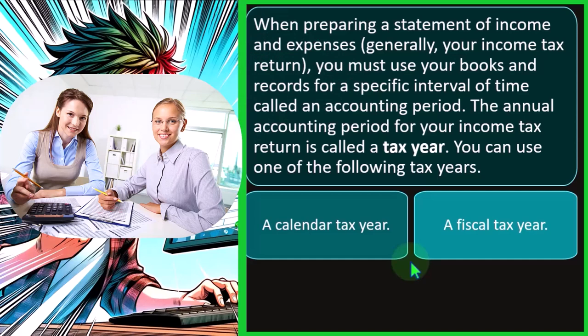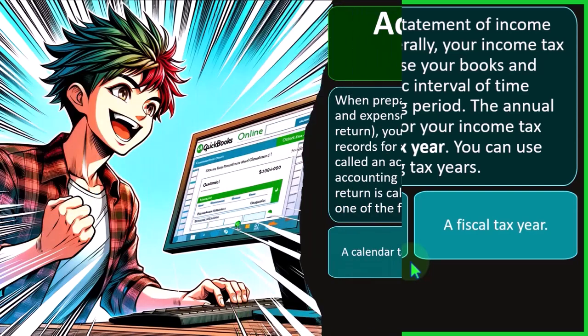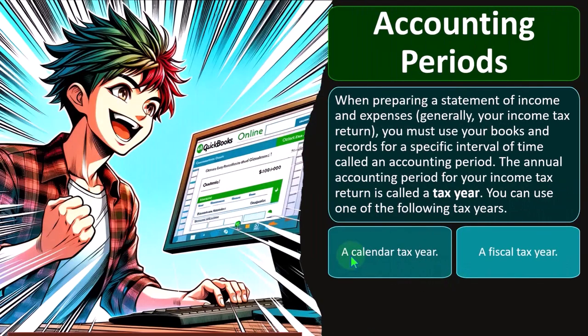If you do your bookkeeping using software like QuickBooks or some related software, you will also have a balance sheet, which is something worth keeping track of. The balance sheet is the double entry accounting system helping to make sure that your income statement accounts — income and expenses — are reported properly, or at least giving you help with that in the proper time period.